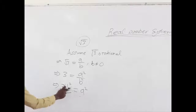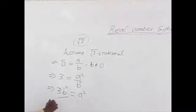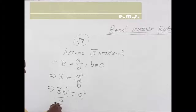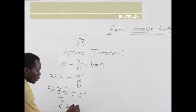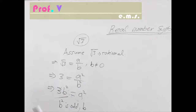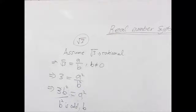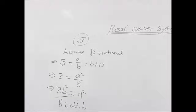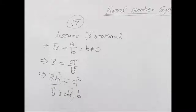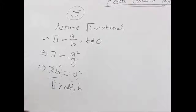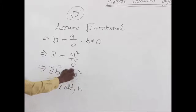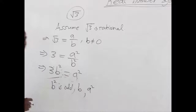Let's take it as if B squared is odd. If B squared is odd, it follows that B will also be odd, because any odd number squared gives an odd number, and any even number squared gives an even number. And since the left-hand side equals the right-hand side, A squared is also odd, which means A is also definitely odd.